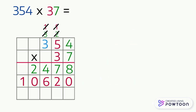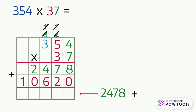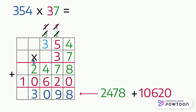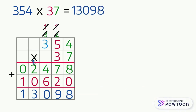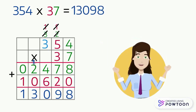The multiplication problem is not over yet — we just have to calculate the sum of the two partial products. 2,478 plus 10,620: 8 plus 0 equals 8, 7 plus 2 equals 9, 4 plus 6 equals 10 — we write 0 and carry 1, then 1 plus 2 equals 3, and 0 plus 1 equals 1. So 354 times 37 equals 13,098. Our multiplication problem is done — now all we have to do is practice multiplying!